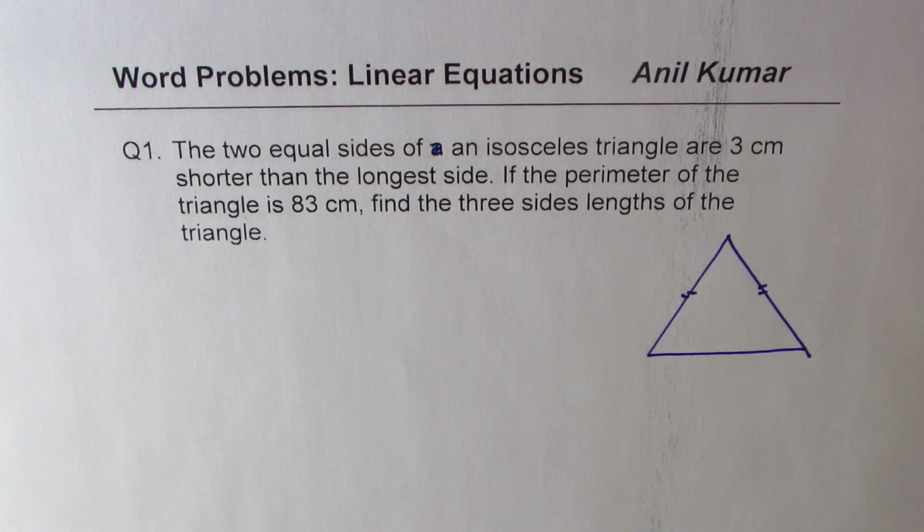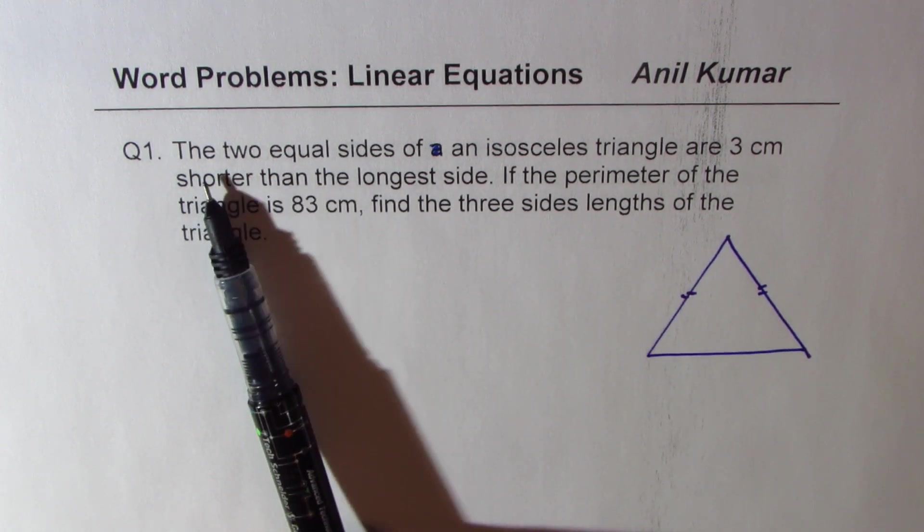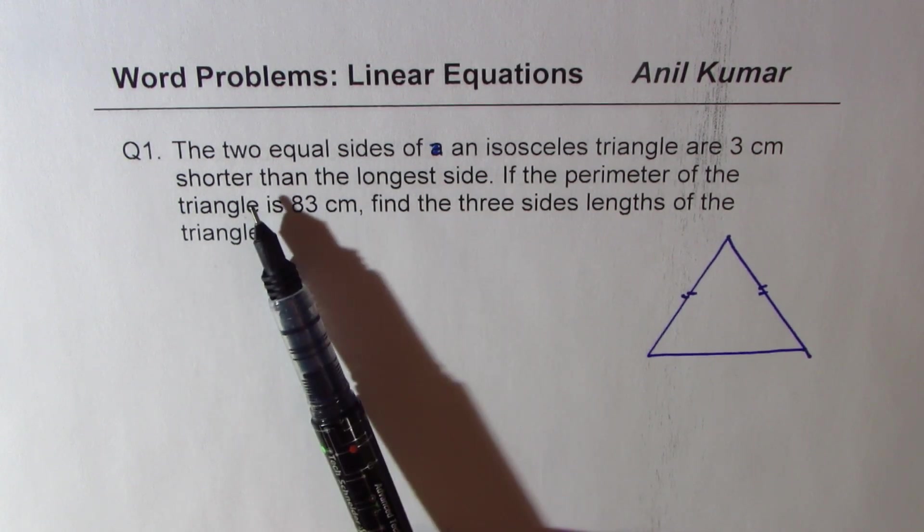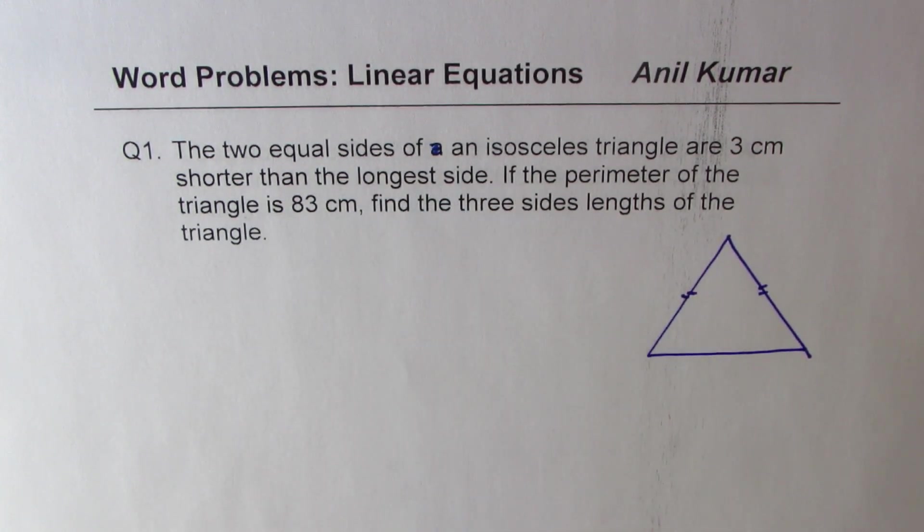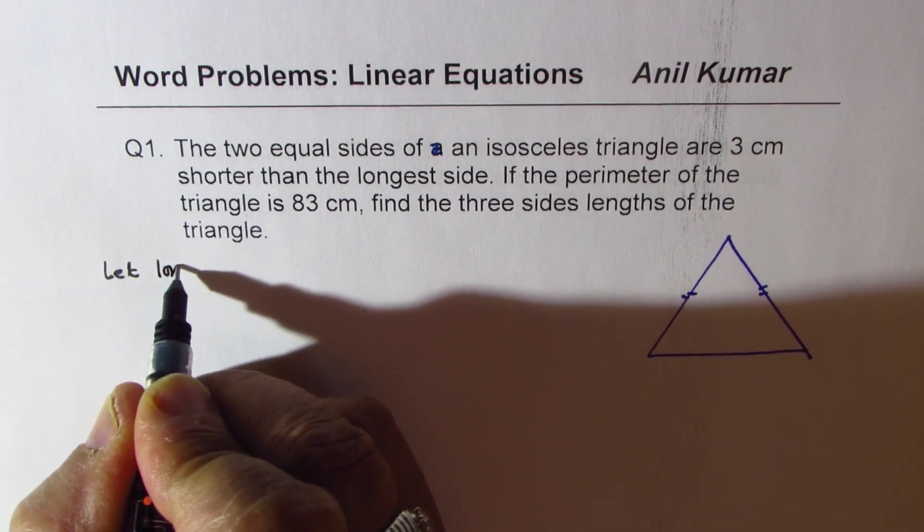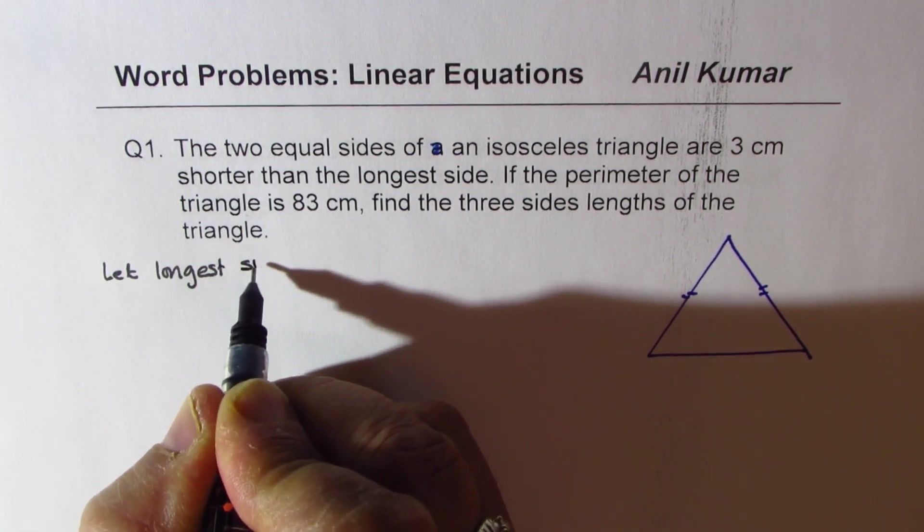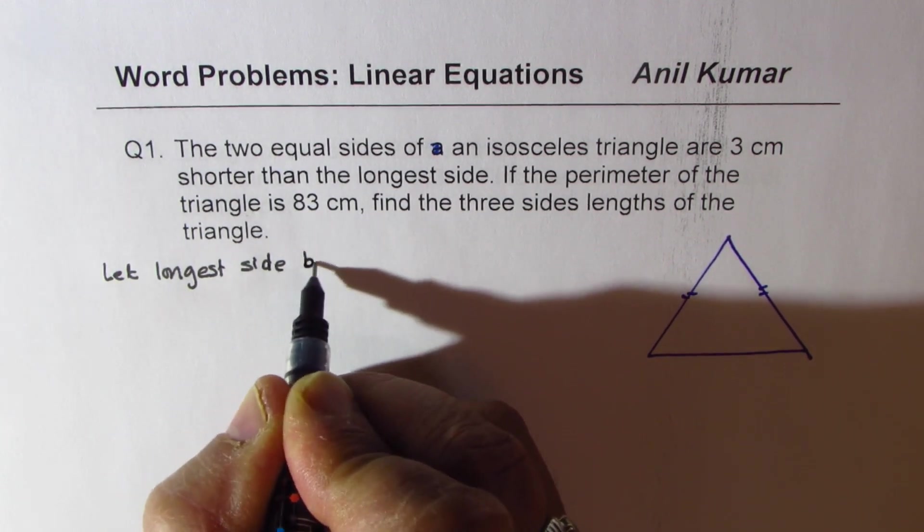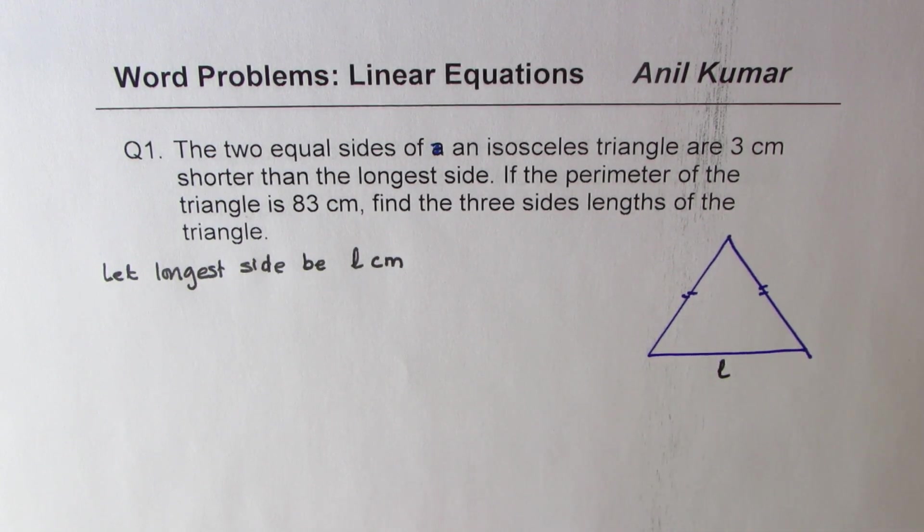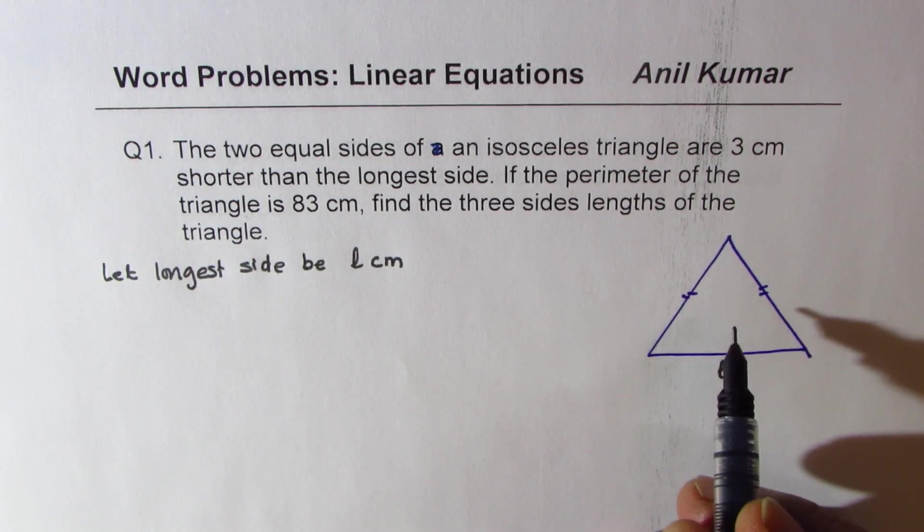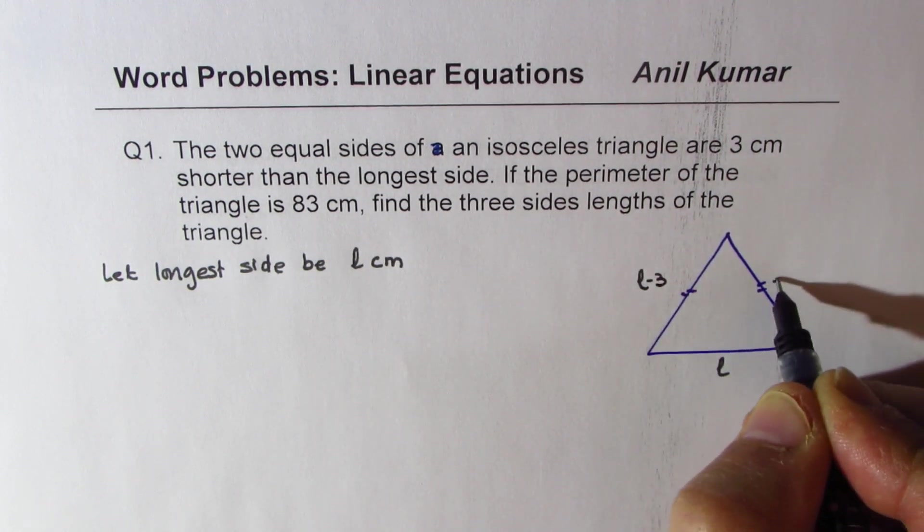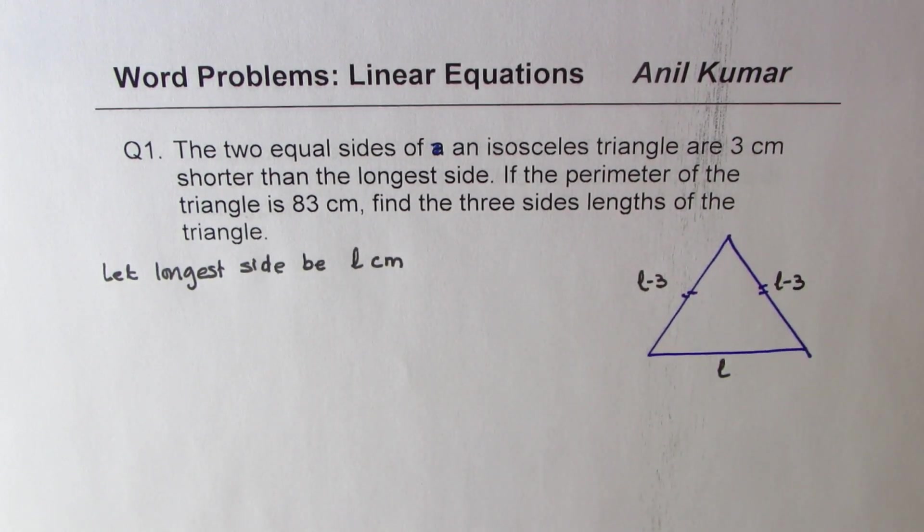Now we'll define the variables. The question is the two equal sides of an isosceles triangle are three centimeters shorter than the longest side. So let longest side be L centimeters. So this becomes L centimeters. Now these two sides are 3 centimeters shorter, so they'll be L minus 3 and L minus 3 each.